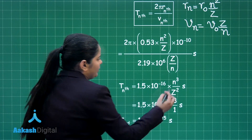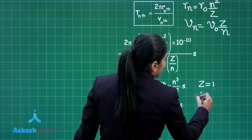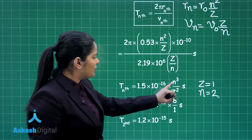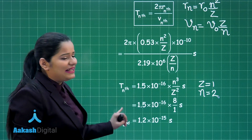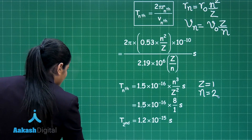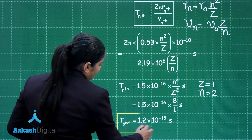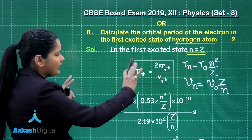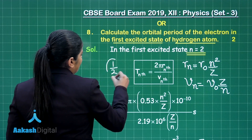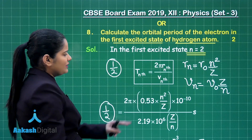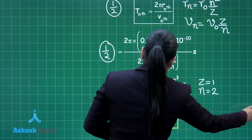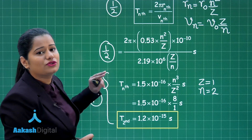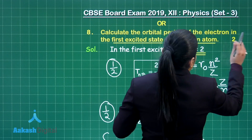For hydrogen atom, z is equal to 1 and n is 2 because we are talking about the first excited state. When you put the values of n and z, you get T as 1.2 into 10 to the power minus 15 seconds. This is our final result. For the marking scheme: writing the formula for the orbital period gets half a mark, substituting the values of r_n and v_n gets another half mark, and the full calculation and final answer gets 1 mark — scoring 2 out of 2 marks for this choice of question number 8.